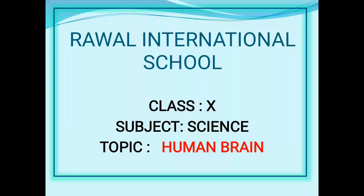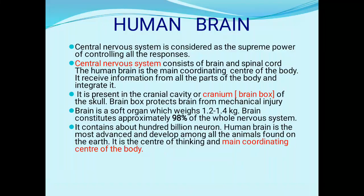Today we are going to discuss the human brain from chapter 'Control and Coordination,' Class 10 Science. The central nervous system is considered the supreme power for controlling all responses. Previously, we discussed the nervous system, which is divided into two parts: the central nervous system and the peripheral nervous system.